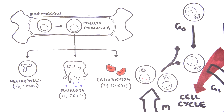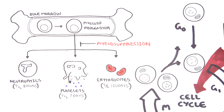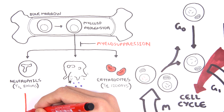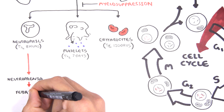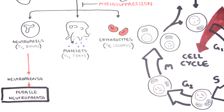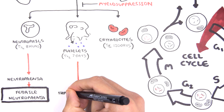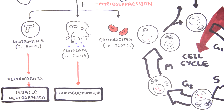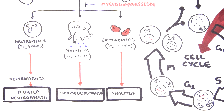Chemotherapy agents target cells with high turnover, so they can induce myelosuppression. Decreased production of neutrophils leads to neutropenia, making the person more susceptible to febrile neutropenia — where someone on chemotherapy develops a high-grade fever, most likely due to an underlying infection. Decreased platelets result in thrombocytopenia, making the person more prone to bleeding. Decreased red blood cells cause anemia, leading to lethargy and decreased oxygen supply to the body.